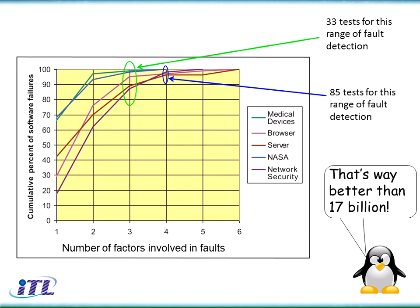If we do four-way combinations with 85 tests, and go back to our graph of how failures are distributed, we see something on the order of 90%-plus fault detection. We can't guarantee that — it's based on empirical data. There is no theory that proves it, and it's easy to come up with a counterexample. But for real-world situations, the empirical data based on thousands of failure reports says we're going to get better than 90% fault detection.